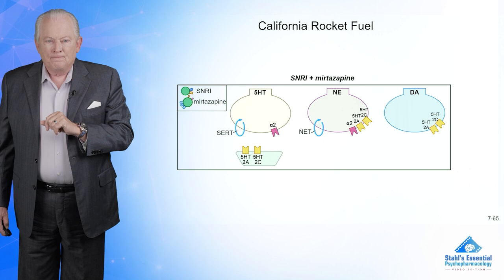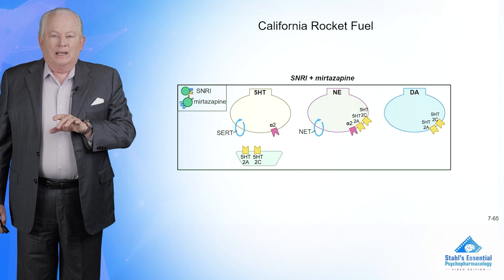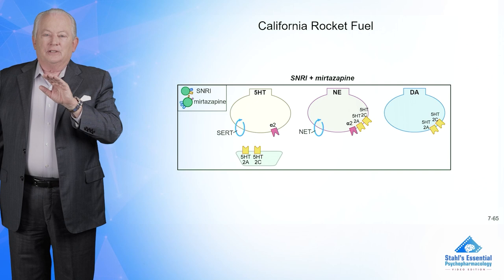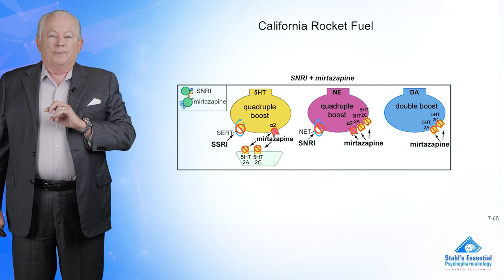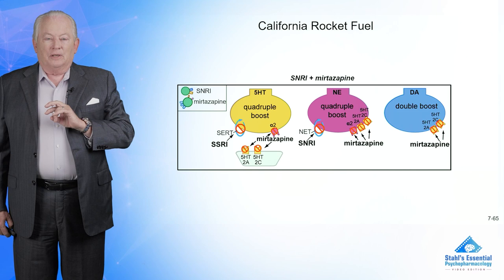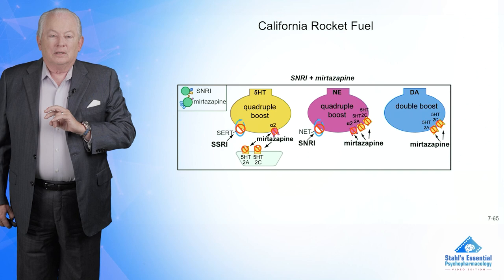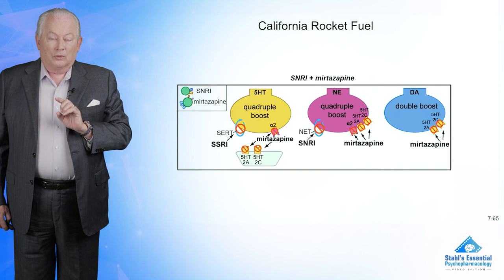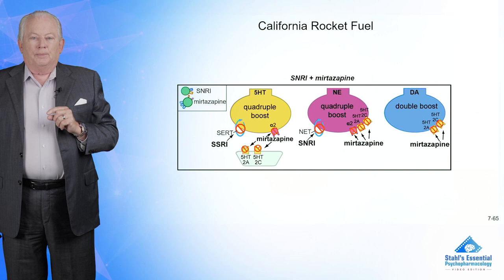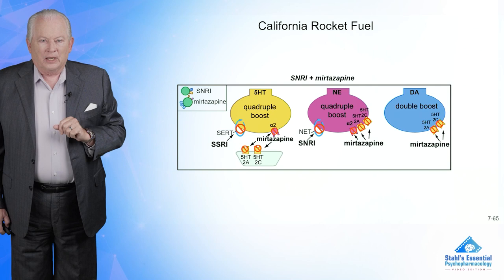On the norepinephrine transporter you've got alpha-2, 5-HT2A, and 5-HT2C receptors, and you have 5-HT2A and 2C on the right for dopamine. What you're going to do is block the serotonin and norepinephrine reuptake pumps with the SNRI, and block the alpha-2, 5-HT2A, and 5-HT2C receptors with mirtazapine. That gives you a lot more dopamine, norepinephrine, and serotonin release than either alone. Anecdotally it works, though it's not well studied, and sometimes it's not tolerated because of the combined side effects.